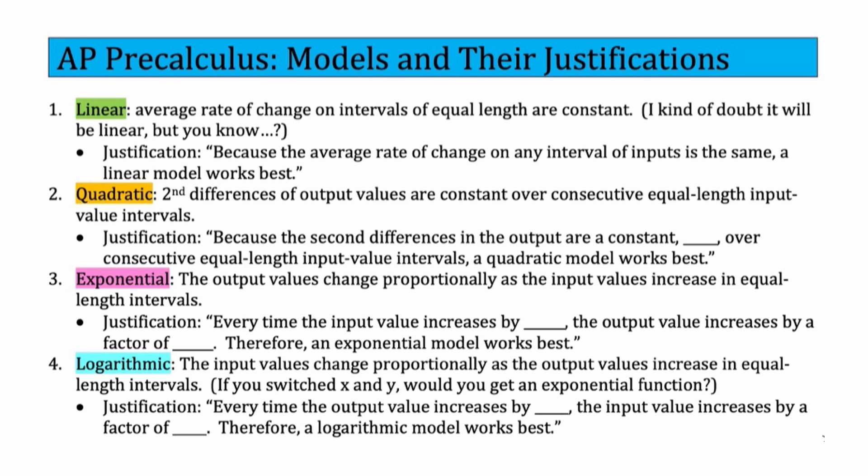So our justification, because the second differences in the output are constant, are a constant, comma, and then say what it is. Like it's always 12 or it's always one-fifth. Over consecutive equal length input values, a quadratic model works best. And then exponential, the output values just change proportionally as the input values increase in equal length intervals. The equal length intervals is really important in AP pre-calculus, so make sure you're always hitting that fact. And our justification would be every time the input value increases by blank, so like one, two, ten, five, whatever, the output value increases by a factor of blank, whatever the ratio of consecutive terms is, and therefore exponential works best.